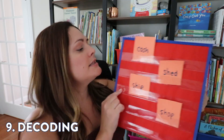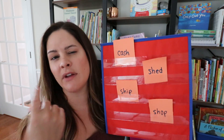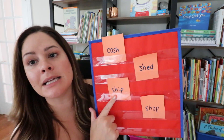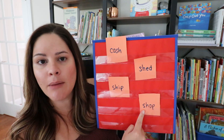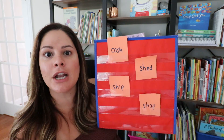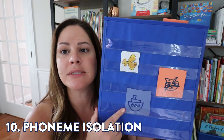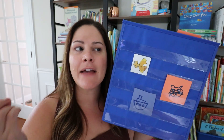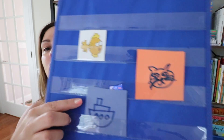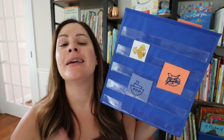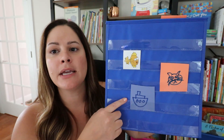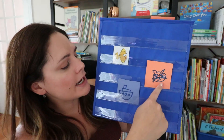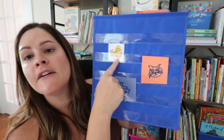Skill number nine is simple decoding — similar to sight words, this would be a list of words with a specific phonics skill you're working on. Here the example is SH words: cash, shed, ship, and shop. Students would have to decode or read the word before they could lift it to see if they found the fish. Last but not least, the tenth skill is phoneme isolation. With this one I would absolutely use images, since students look at the picture and try to identify the first phoneme or sound they hear. Here I have drawings of a boat and a cat — students would say 'k' for this one, 'b' for this one, and 'f' for this one.